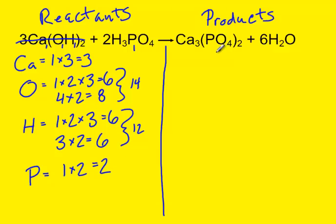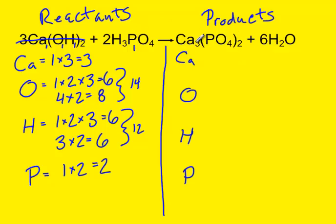Now we move on to the product side and do the exact same thing. I always like to rewrite my elements in the same order as on the reactant side — it makes it easier to compare when we're done counting atoms on this side. Same process. We start with calcium. Is there a subscript? Yes, there's a 3. Is there any parentheses? No. Is there a coefficient? No. That makes it quite easy — there's simply 3.